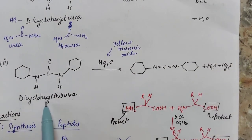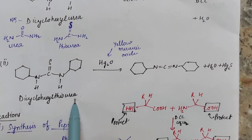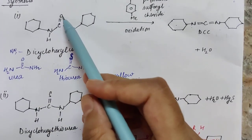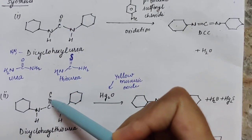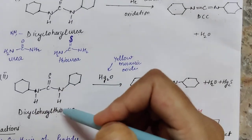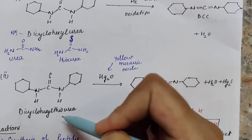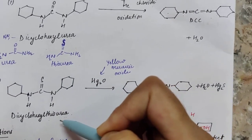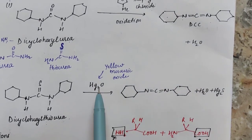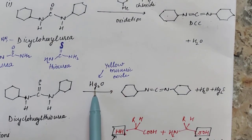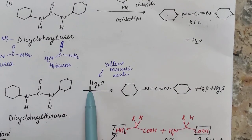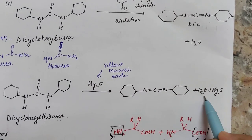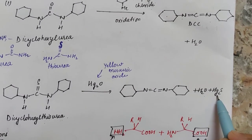In the second synthesis, dicyclohexyl thiourea — where the oxygen is replaced by sulfur — is treated with mercuric oxide, which is yellow in color. This gives DCC, water, and HgS.